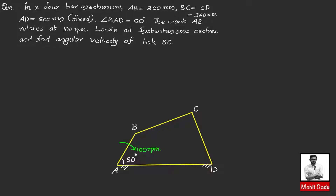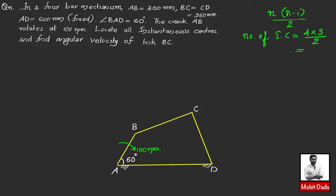We have a problem on a four-bar mechanism to solve by the instantaneous center method, and we need to find the angular velocity of link BC. For a mechanism with N number of links, the number of instantaneous centers is given by N(N−1)/2. For this four-bar mechanism, N equals 4, therefore the number of instantaneous centers equals 4×3/2, which equals 6.